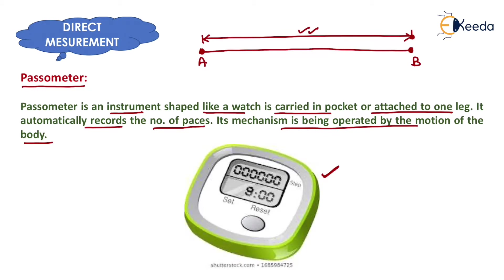In today's time, MI Band and Apple Watch both come with this feature — the measurement of paces between two points.